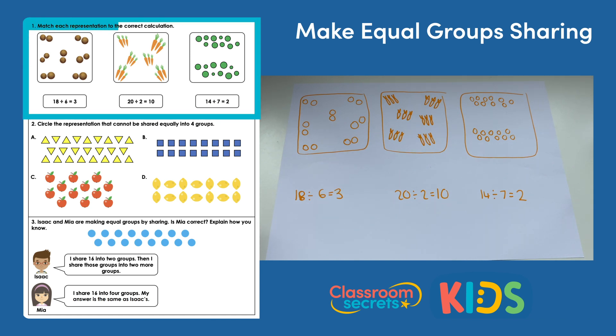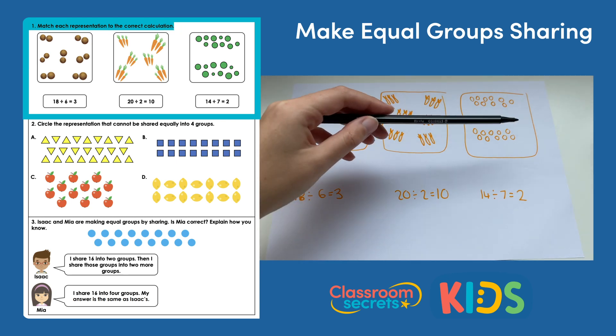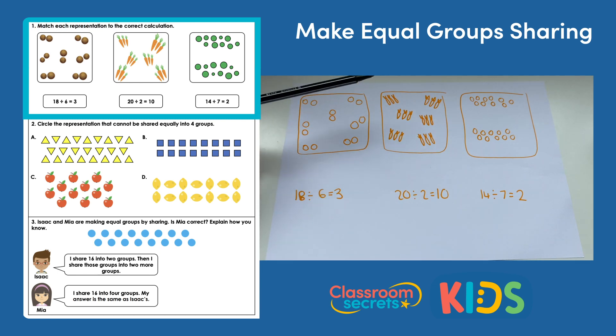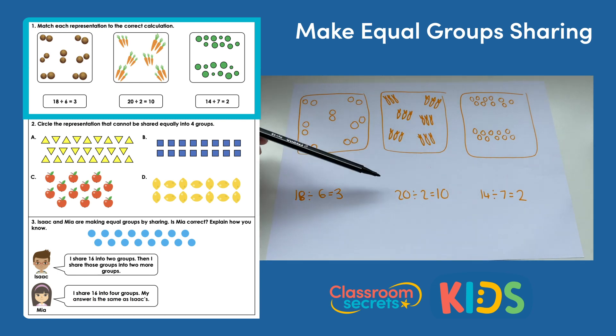Question one: match each representation to the correct calculation. We need to count up the totals and see how many groups they've been shared between so that we can match them up to the divisions.